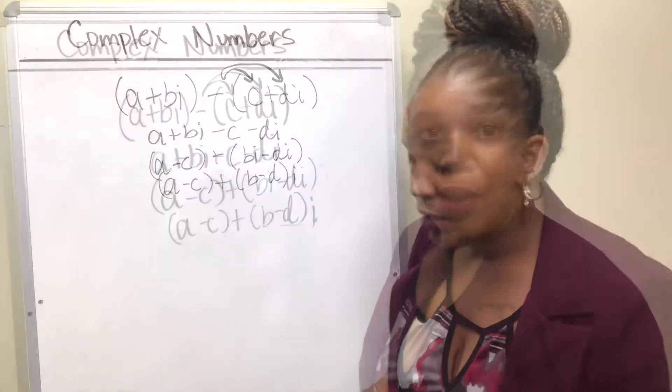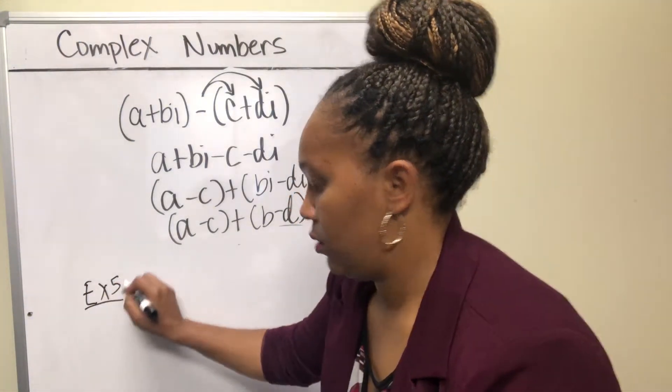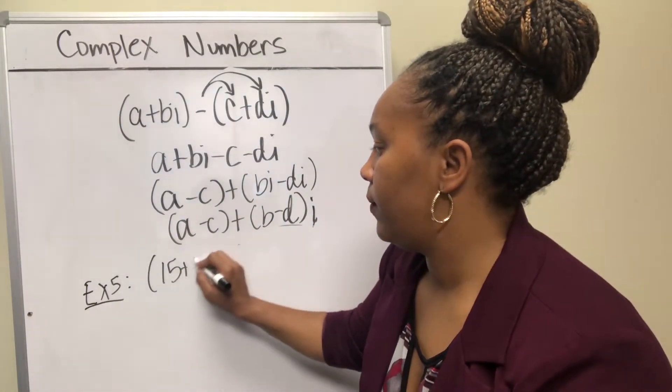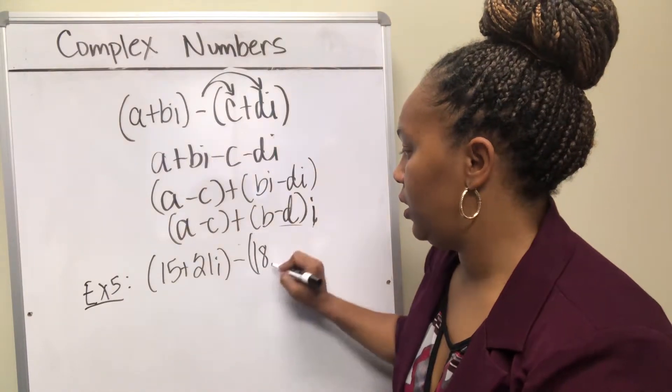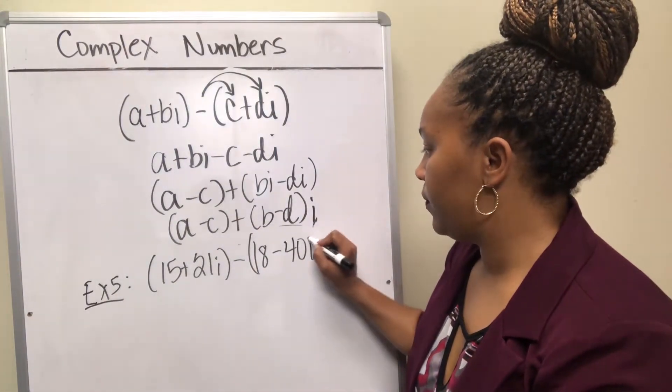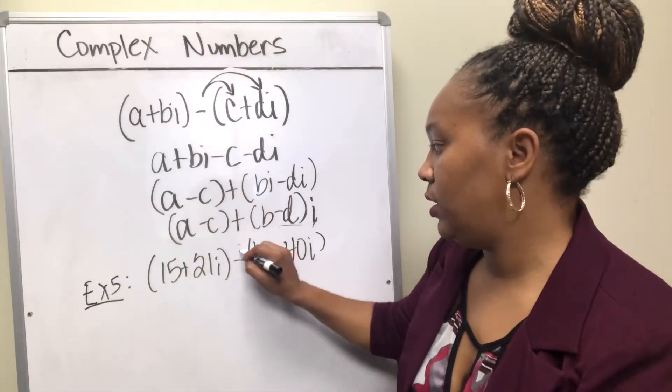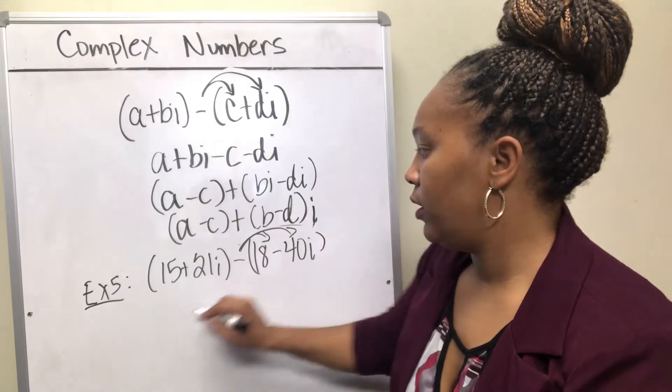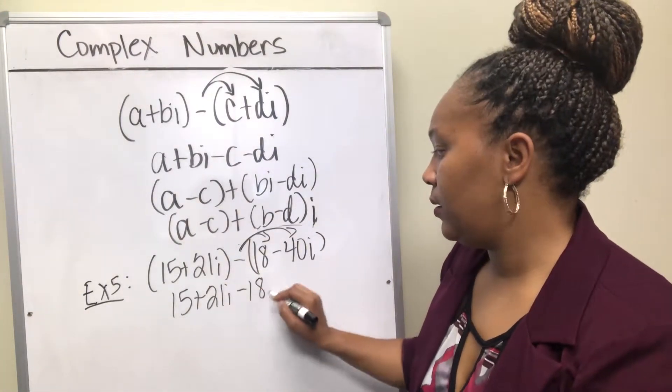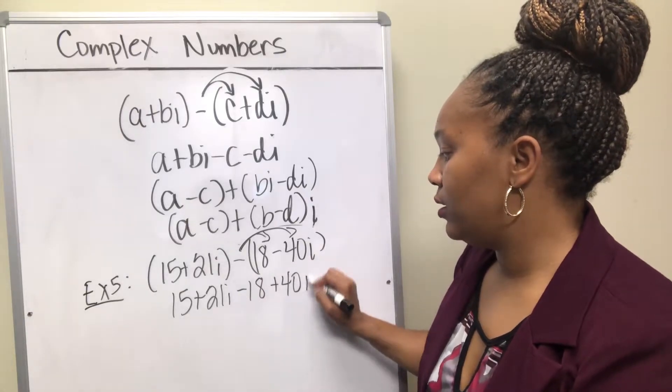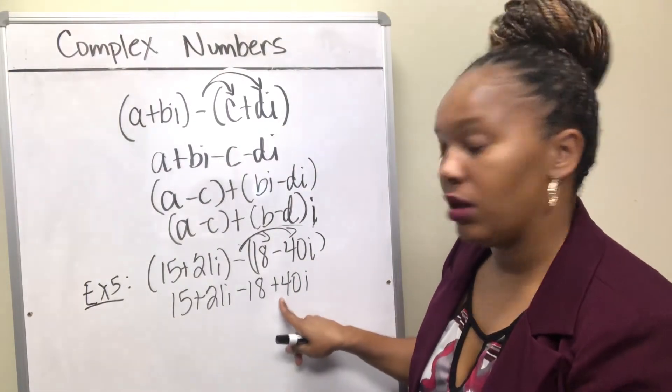So for example 5, we are going to subtract 15 plus 21i minus 18 minus 40i. If you think of this as the second method that I talked about, which is distributing the negative, then you get 15 plus 21i minus 18 plus 40i. So this negative distributes here as well, and a negative times a negative is a positive, so this becomes plus 40i.